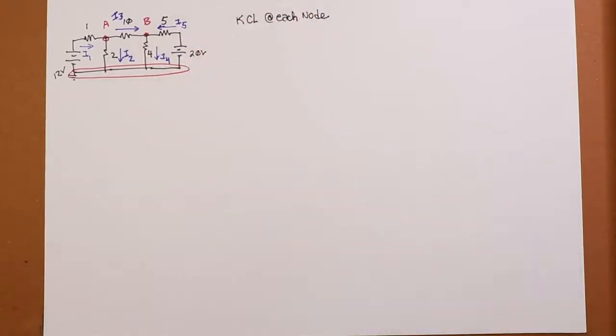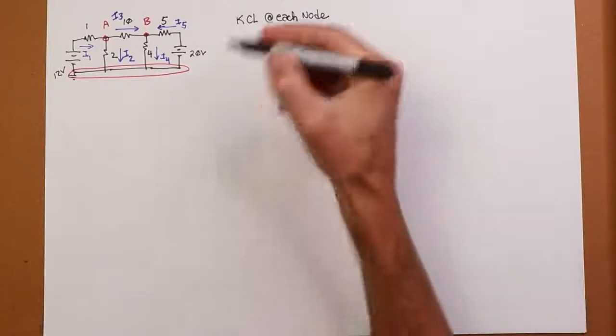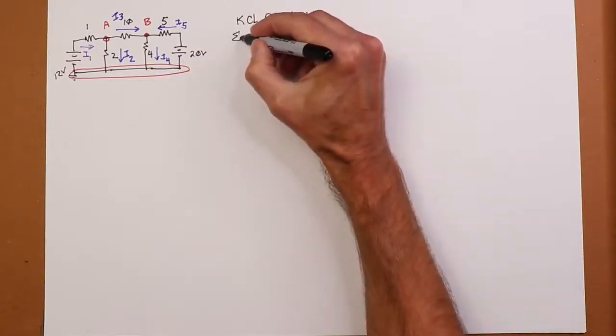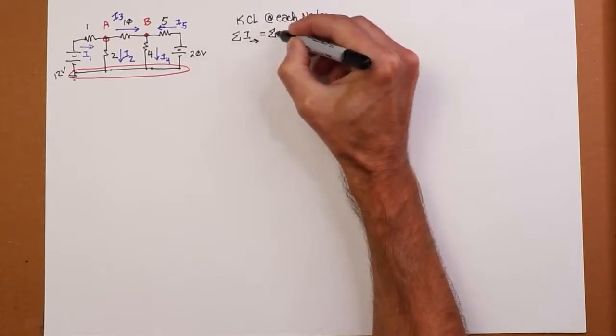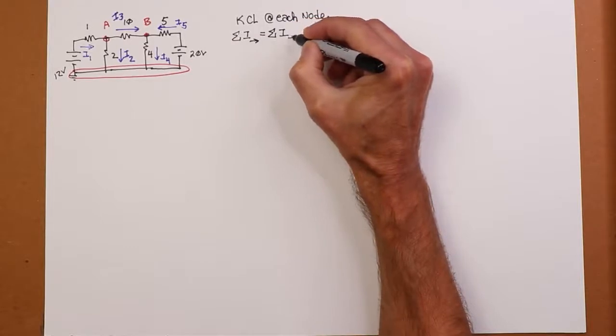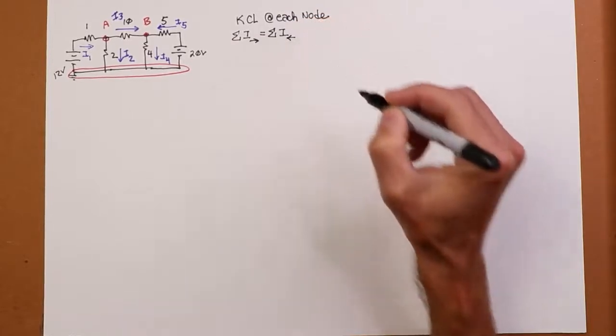So I'm just going to say there's a current flowing through the 1 ohm. I'm going to call that I1. I'll say there's a current flowing down through the 2 ohm. I'll call that I2. And then I'm going to just assume it's going from left to right. On the 10 ohm, I'll call that I3. It could be going the other way, but it's not going to be a problem, as you'll see.